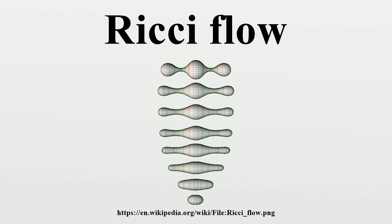More generally, if the manifold is an Einstein manifold, then Ricci flow will collapse it to a point if it has positive curvature, leave it invariant if it has zero curvature, and expand it if it has negative curvature. For a compact Einstein manifold, the metric is unchanged under normalized Ricci flow. Conversely, any metric unchanged by normalized Ricci flow is Einstein. In particular, this shows that in general the Ricci flow cannot be continued for all time, but will produce singularities.